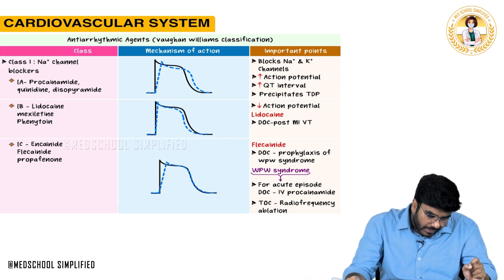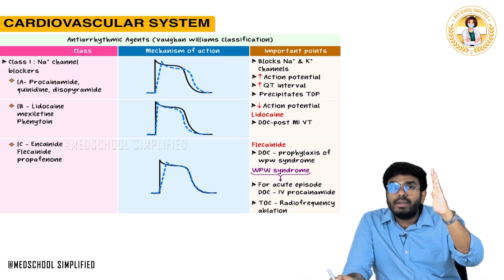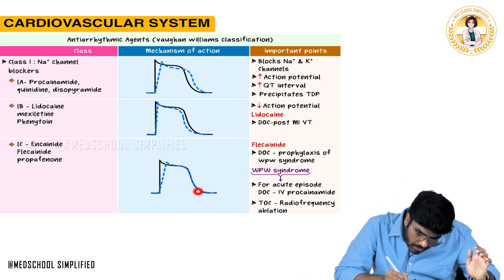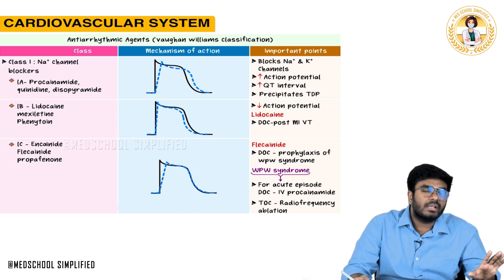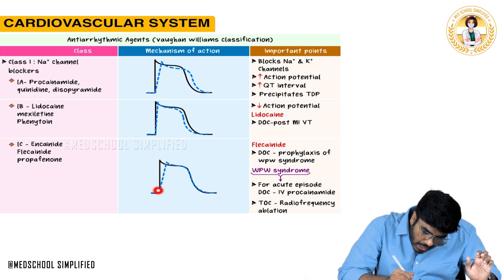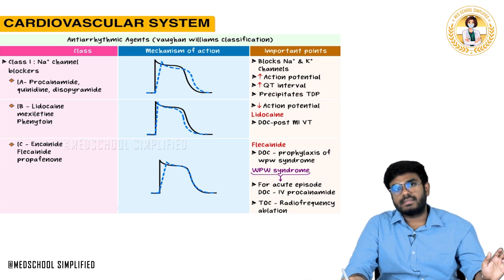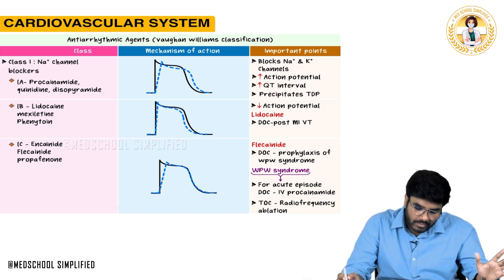Class 1C drugs include flecainide, propafenone, and moricizine. They are sodium channel blockers, so phase 0 depolarization is affected and the slope is decreased. However, there is no effect on repolarization — no effect on potassium channels. Potassium channels are neither opened nor closed. Action potential duration is not significantly changed.